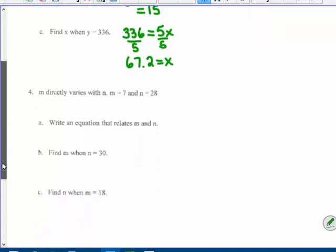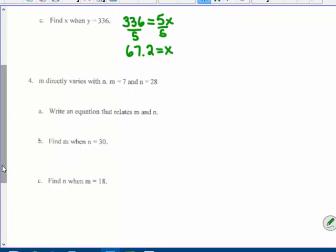Number four. M varies directly with n. M is seven and n is twenty eight. And your instinct is, I want to put that twenty eight on the top. But M came first. So that goes on the top. So it's M over n equals k.